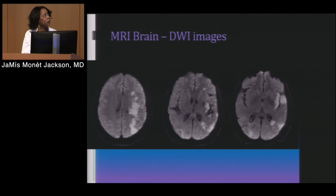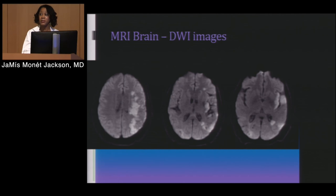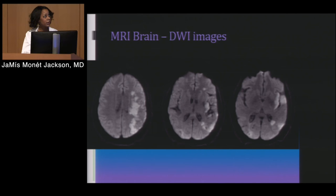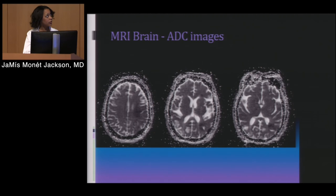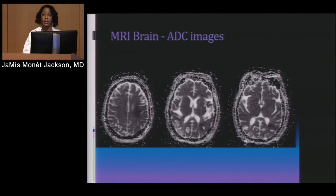This is her MRI. This is a DWI, and she has changes. Any time on DWI when you see bright — which we also have to correlate with ADC — that means there's diffusion restriction, which shows up as ischemia. The patient has had a stroke, and hers has affected multiple areas of her brain in the left MCA territory. It does correlate with ADC: on ADC you should see dark, and these two images have to be used together to truly diagnose ischemia or stroke.